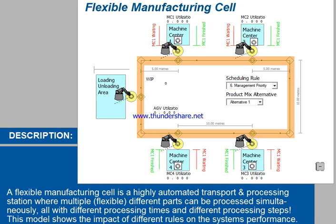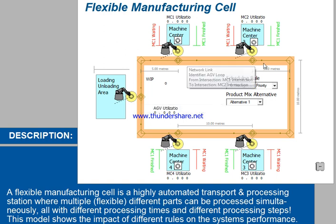A flexible manufacturing cell is a highly automated transport and processing station that can handle multiple different parts and processes simultaneously on the same machine, using different processing times and processing steps. This model shows the impact of different scheduling rules on system performance.